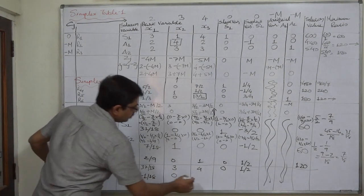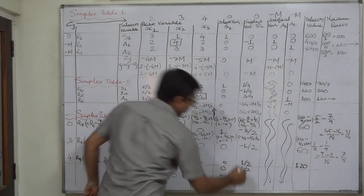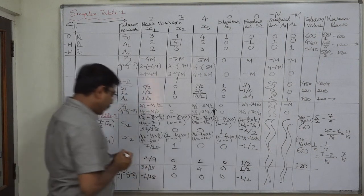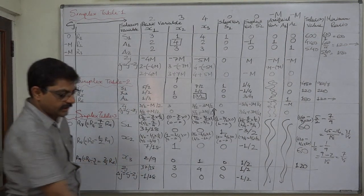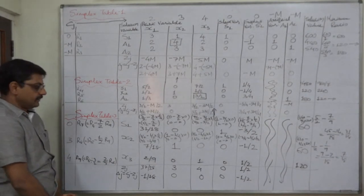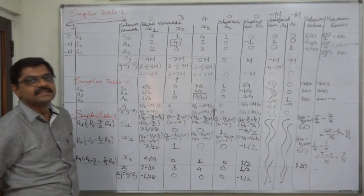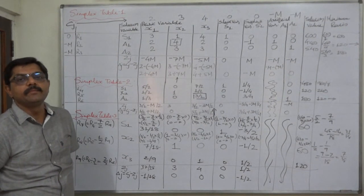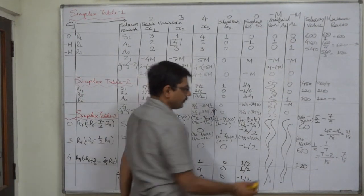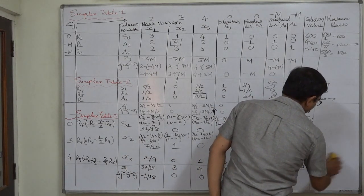Delta values: 0, 3−3=0, 4−4=0, 0, 0−(−1/2)=−1/2. All delta J values are 0 or negative. Since this is a maximization problem and all delta J values are 0 or negative, this is the optimal solution of our original linear programming problem.